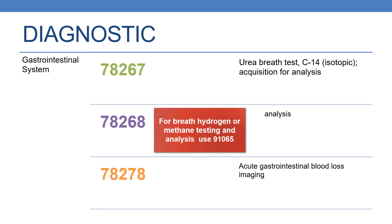The next code is 78267, which deals with urea breath test, C14 isotopic acquisition for analysis — here the sample is taken for analysis. The next code is 78268, which involves urea breath test where analysis is included. Whereas in 78267, only the sample is taken for analysis. For breath hydrogen or methane testing and analysis, use 91065.